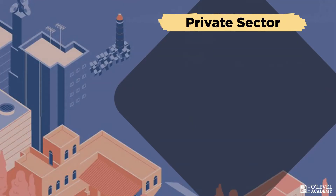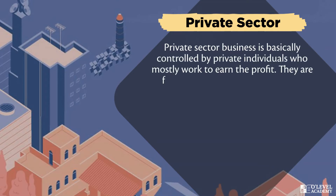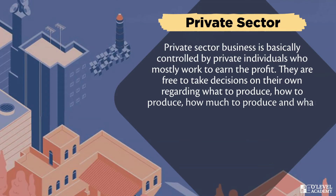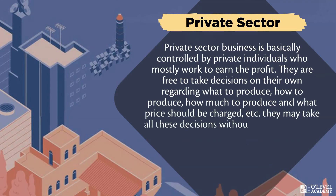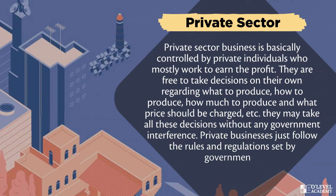Private sector business is basically controlled by private individuals who mostly work to earn profit. They are free to take decisions on their own regarding what to produce, how to produce, how much to produce, and what price should be charged. They may take all these decisions without any government interference. Private businesses just follow the rules and regulations set by the governments.